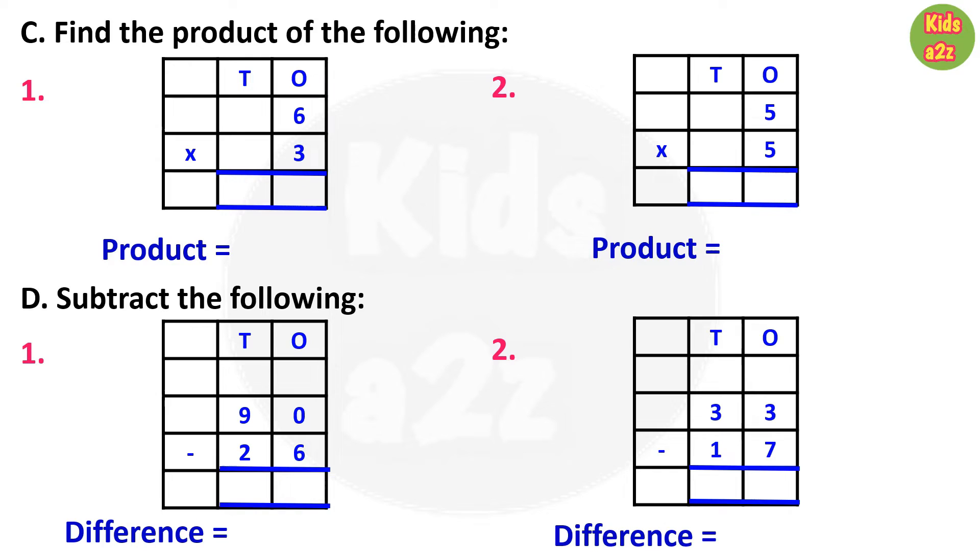Next question is on multiplication. For question number 1, here kids need to multiply 6 by 3 and the answer is 18. Next one: 5 multiplied by 5, that is 25.